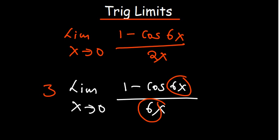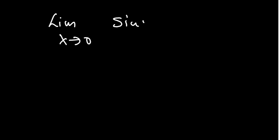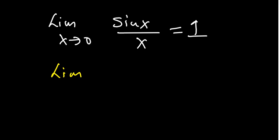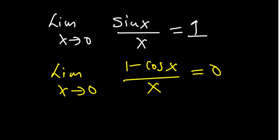At this point the expression matches the cosine identity, so we substitute: the limit equals zero. Therefore we have 3 times zero, which is zero. The limit is zero. To summarize: for sine, the limit as X approaches zero of sine X over X equals one. For cosine, the limit as X approaches zero of one minus cosine X over X equals zero. Express any given problem in one of these forms and simplify.